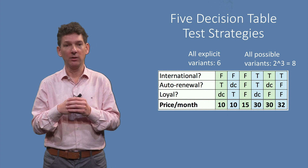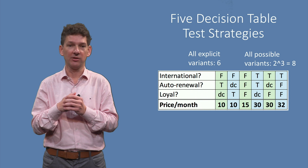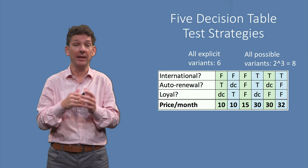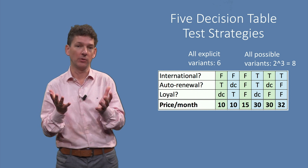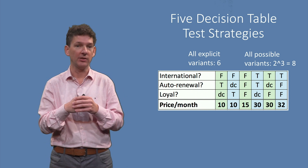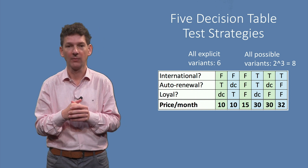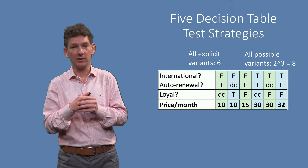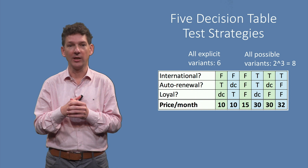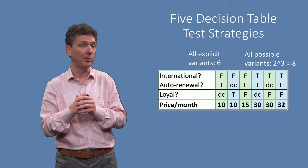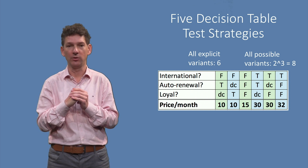but does not test unspecified or default behavior. To counter that, you can pick the most rigorous strategy, simply called all variants, which tests every possible variant. For n conditions, this gives 2 to the power of n test cases. For example, this leads to 2 to the power of 3, which is 8 different test cases, two more than explicitly specified. Since the number of test cases grows exponentially with the number of conditions, for realistic decision tables this strategy can easily become intractable, both in terms of test suite construction and execution.